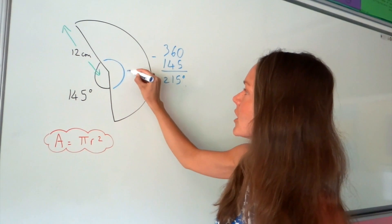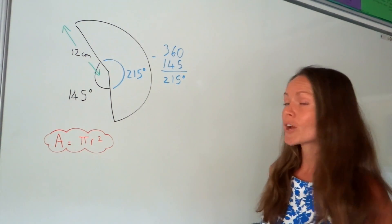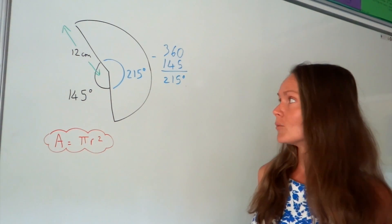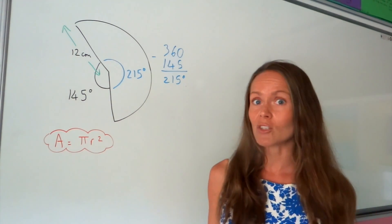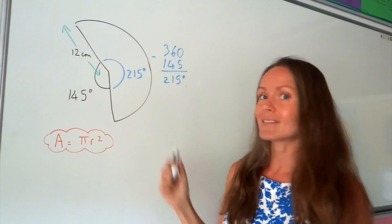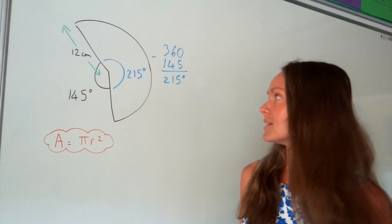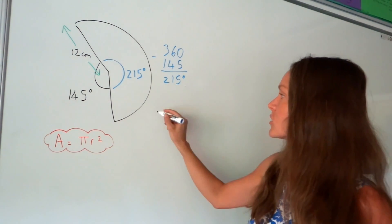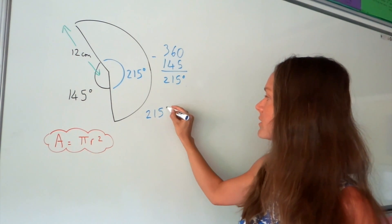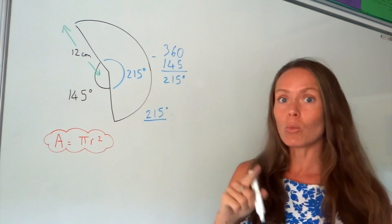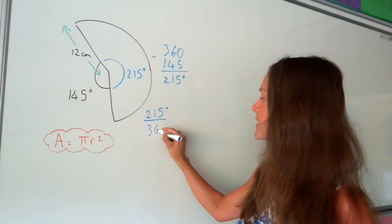Those are the number of degrees inside our sector, so now we can work out the area of the sector. We need to find out what fraction of a full circle this sector is, and we can do that by using the degrees. We know there are 215 degrees in our sector, and in one full circle there are 360 degrees.